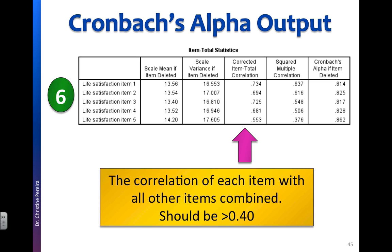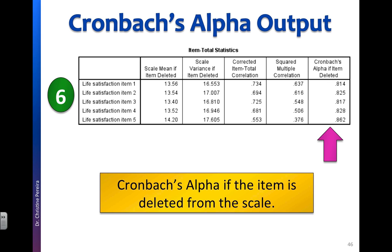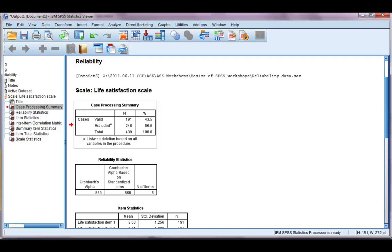Our next table is the item total statistics. The middle column is the correlation of each item with everything else combined — so item 1 correlated with items 2 to 5 combined, item 2 correlated with items 1, 3, 4, and 5 combined. It's each item by itself correlated with everything else grouped together. The last column we want to look at is the Cronbach's Alpha if the item is deleted from the scale. If you have a low Cronbach's Alpha, look at this column to see if removing any particular item would significantly increase your alpha — for example, if your alpha was below 0.7, would removing an item increase it to greater than 0.7? That's how we interpret the statistics output for our Cronbach's Alpha.